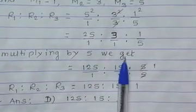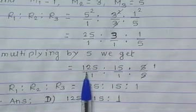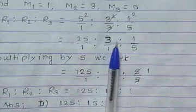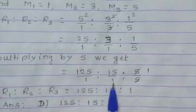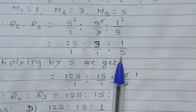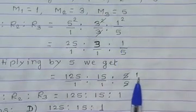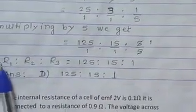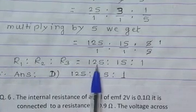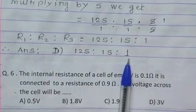Multiplying by 5 we get 5 into 25 that is 125:5:1. Therefore the answer is D, 125:15:1.